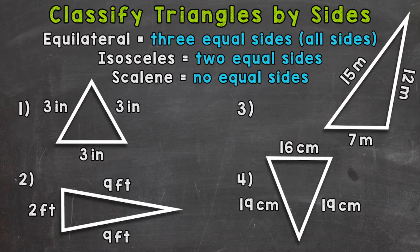Next, we have isosceles triangles. That means two equal sides. And then lastly, we have scalene triangles. That means no equal sides.